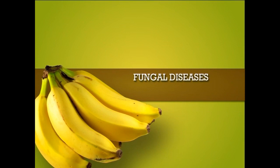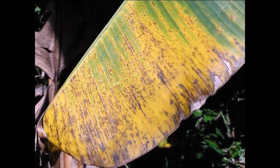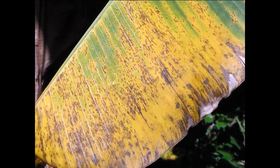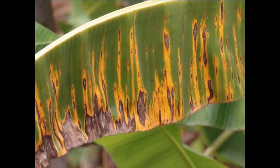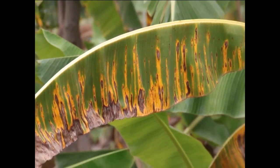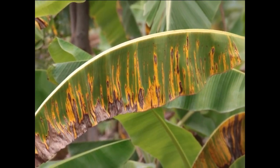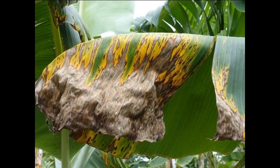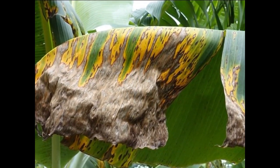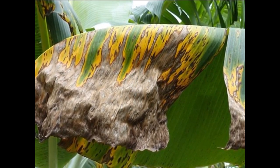First, fungal diseases. The first one is Sigatoka leaf spot. The disease-causing pathogen produces slight yellow or brownish-green narrow streaks which enlarge in size, developing into linear, oblong, muddy brown to black spots. This spot leads to blight and splitting of leaf lamina, then complete leaf drying followed by defoliation.